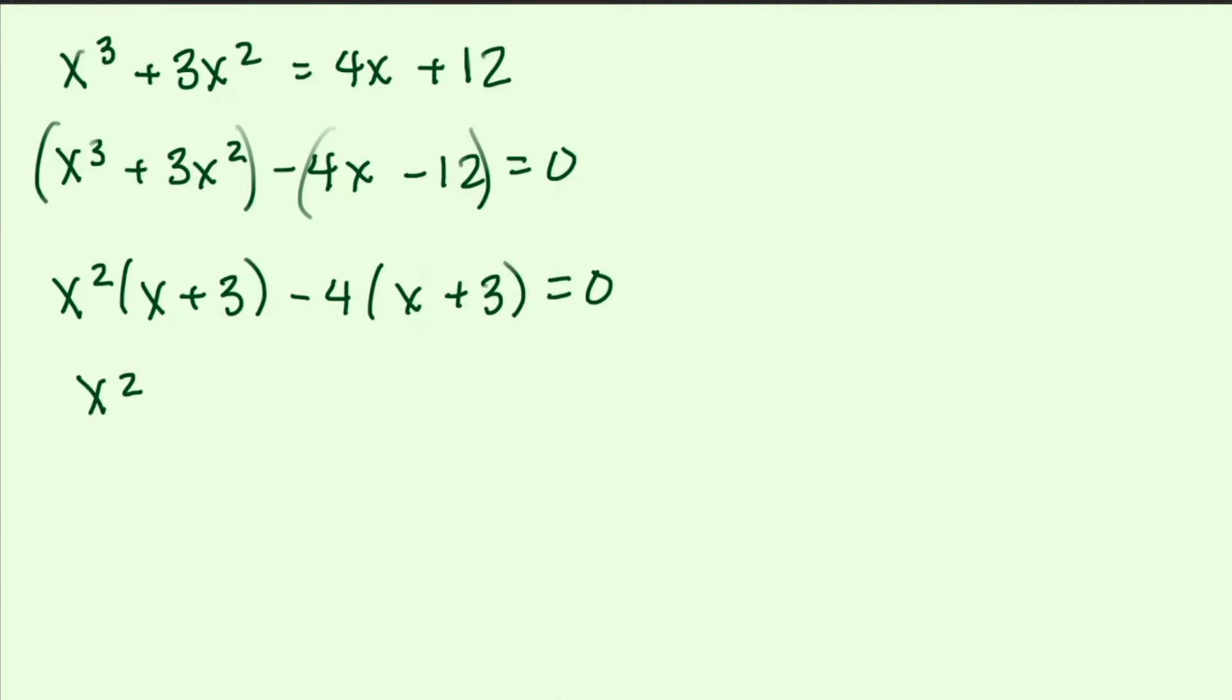Now we're left with x squared minus 4, x plus 3 equals zero. Now the only way to make this equation zero is if either this first chunk is zero or the second is zero.